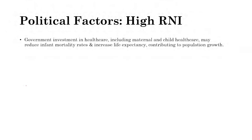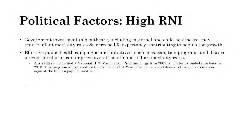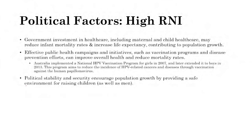Government investment in healthcare — including maternal and child healthcare — reduces infant mortality and increases life expectancy, contributing to overall population growth through higher birth rates and lower death rates. Effective public health campaigns like vaccination programs improve health and reduce mortality rates, leading to population growth. Australia implemented an HPV vaccination program for girls about 15-17 years ago, extended to boys about 10 years ago, reducing HPV-related cancers and diseases.